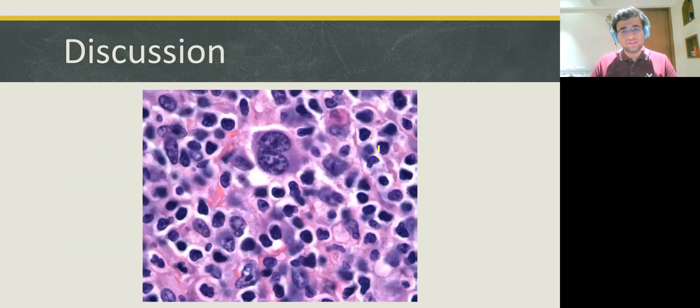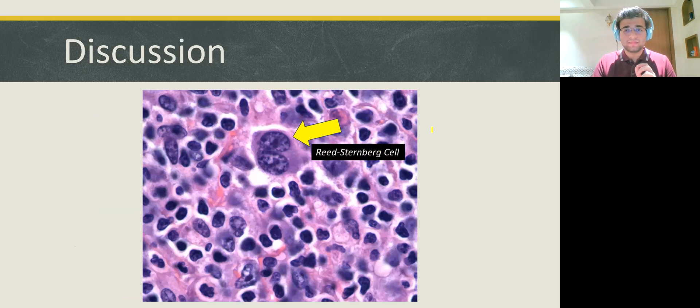Ahead, we have the histopathological slide. In this slide, we see a large cell. It is bilobed and it is eosinophilic with a characteristic owl-eye appearance. This cell is the Reed-Sternberg cell. A Reed-Sternberg cell in presence of an inflammatory background is diagnostic of Hodgkin's lymphoma.